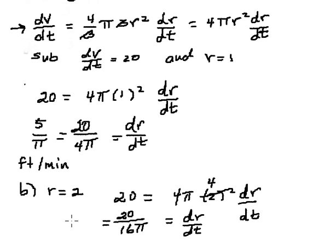Just reduce that, divide by 4 and we have 5/(4π) feet per minute.